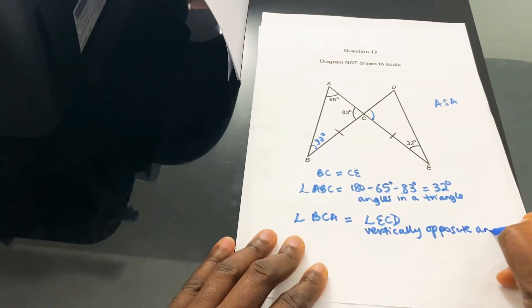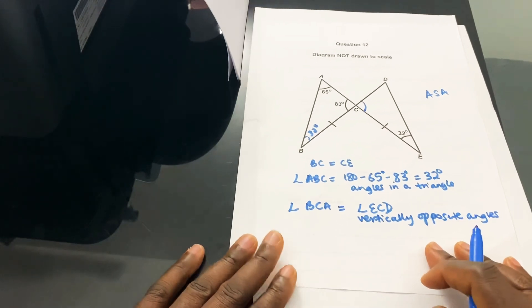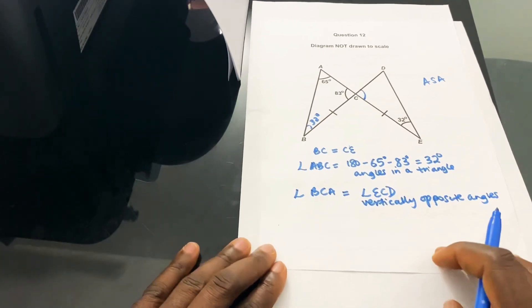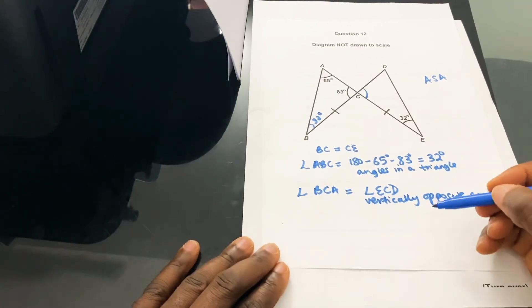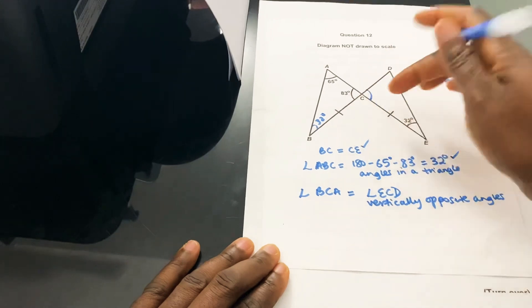You have to write your reason behind every step. That's why I'm making sure I'm writing every single reason. Once you've got those three points—the sides equal, these angles equal, these angles equal, and these angles equal.